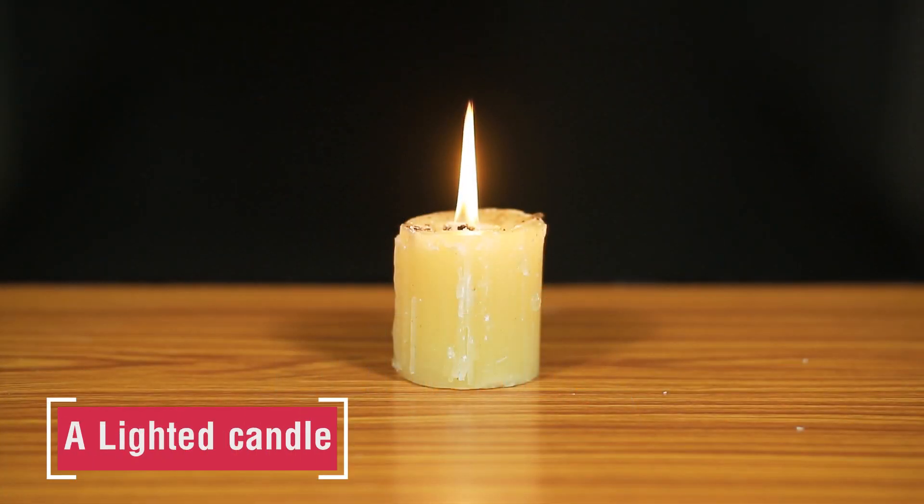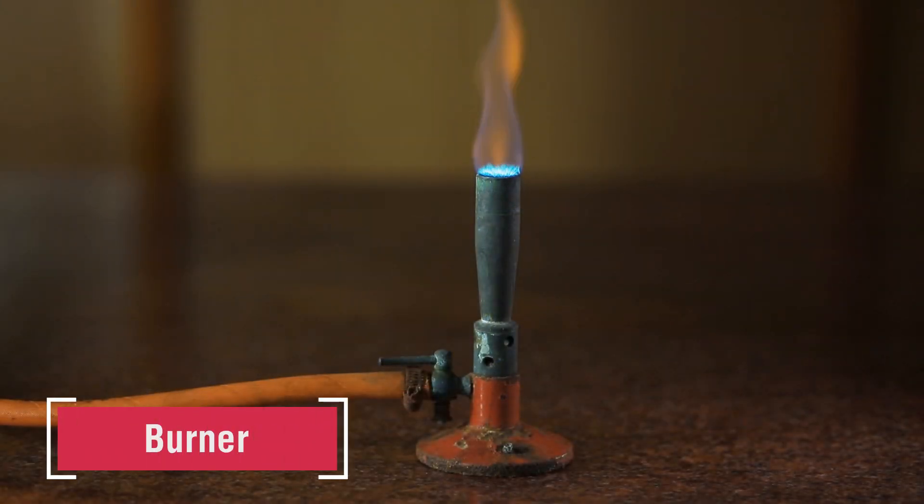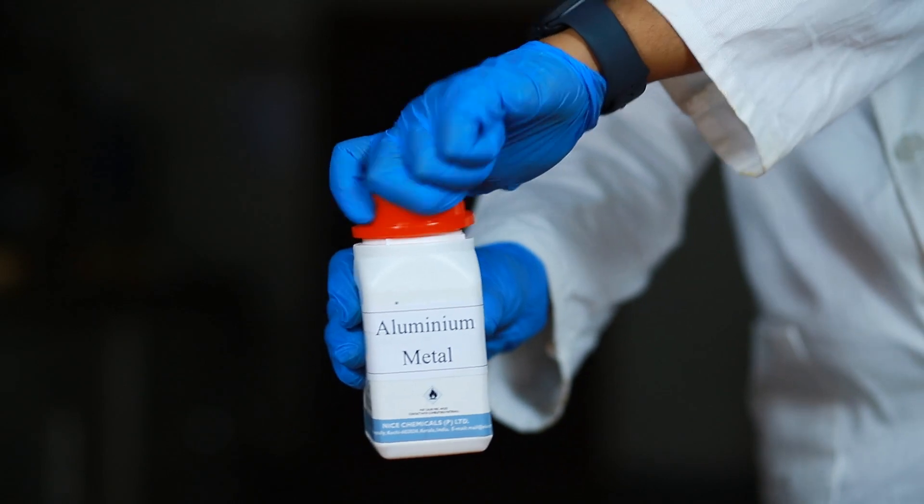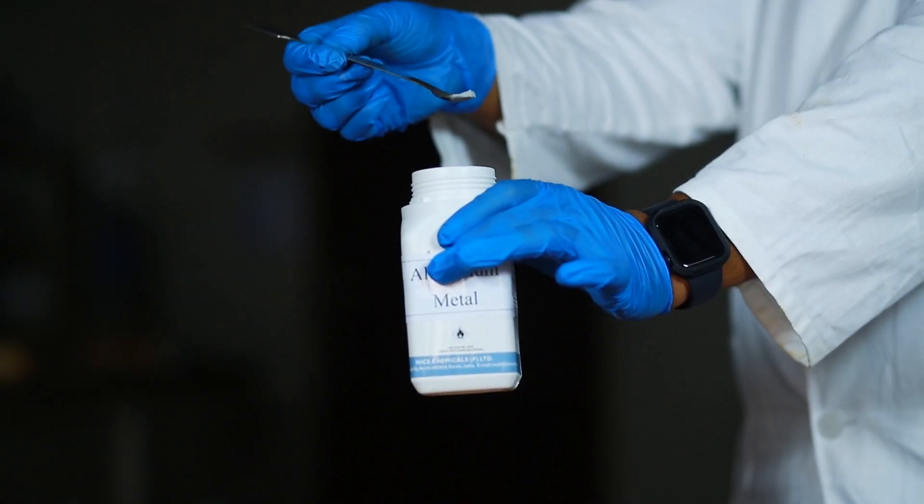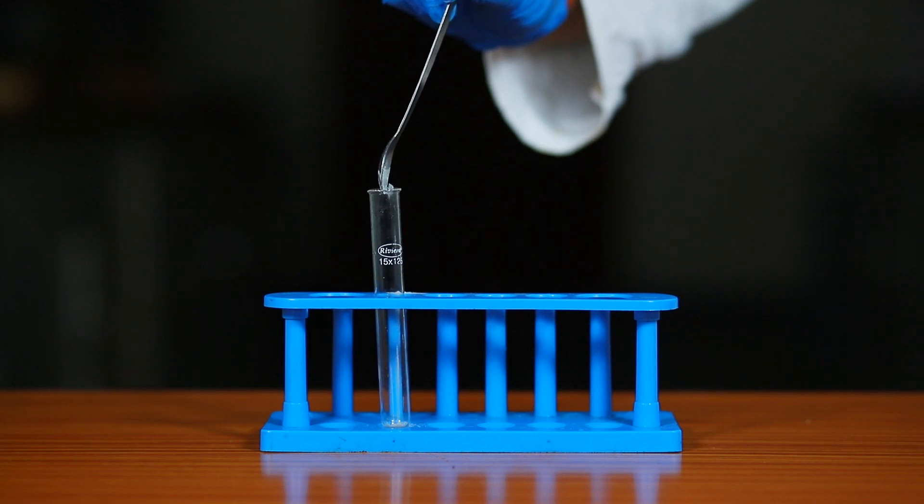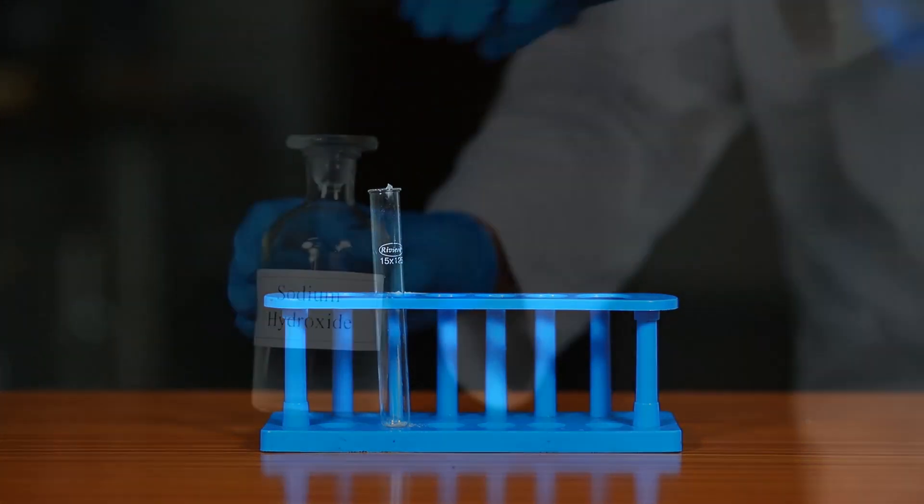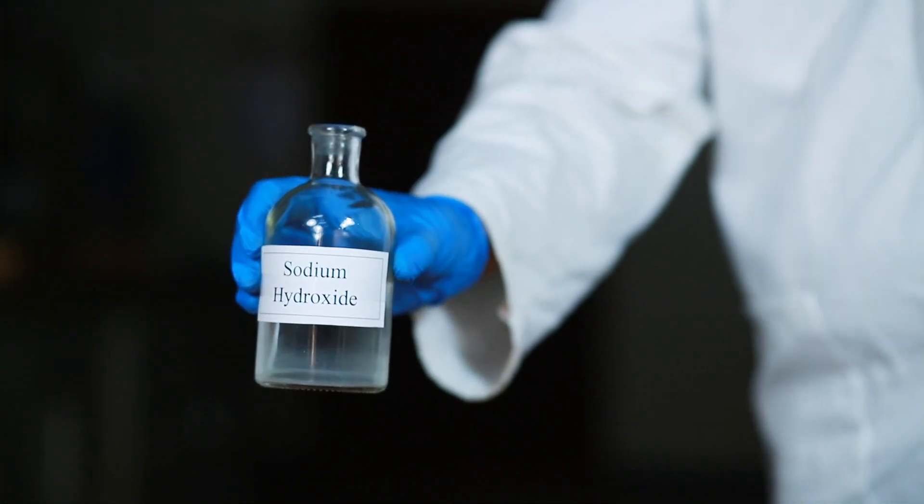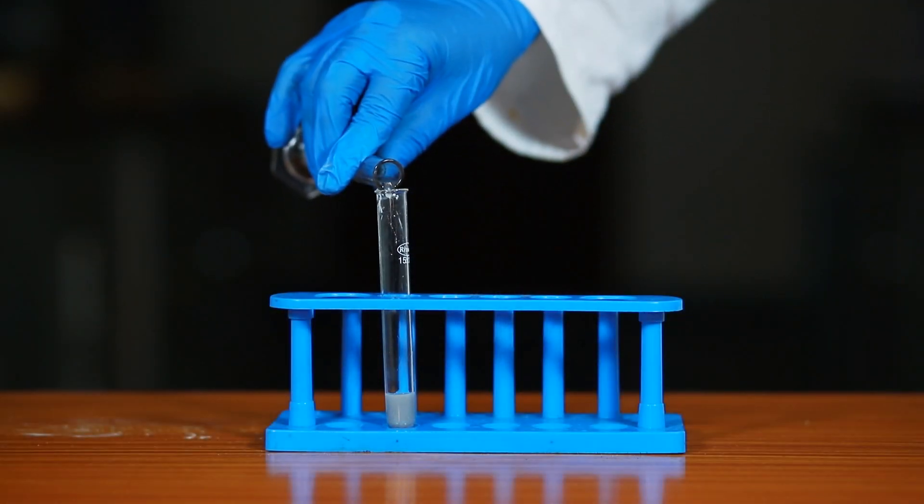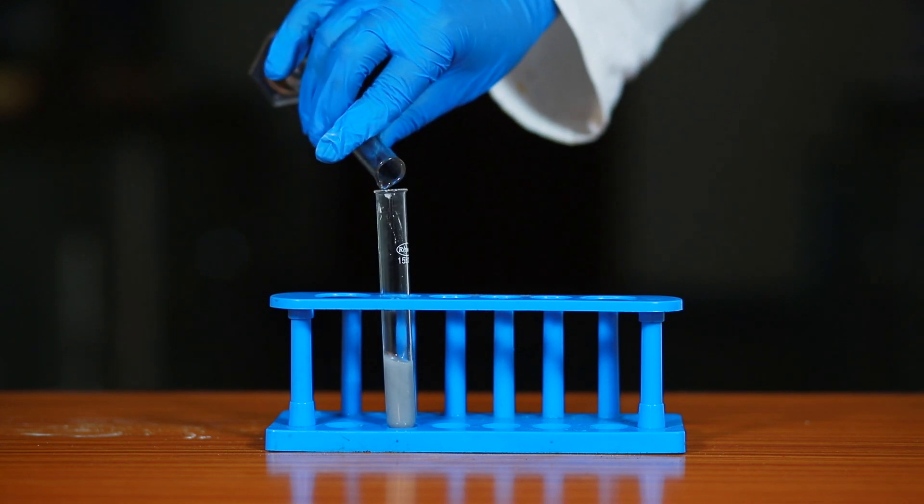A lighted candle and a burner. Procedure: take two pieces of aluminium metal using a spatula and put the aluminium metal into a test tube placed in the test tube stand. Take about 5 ml sodium hydroxide solution in a measuring cylinder and pour it into the test tube containing aluminium metal.